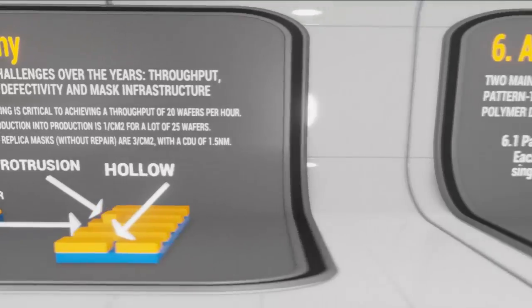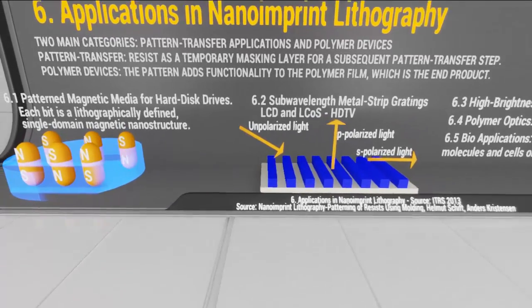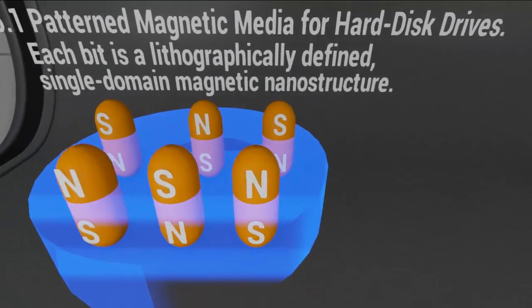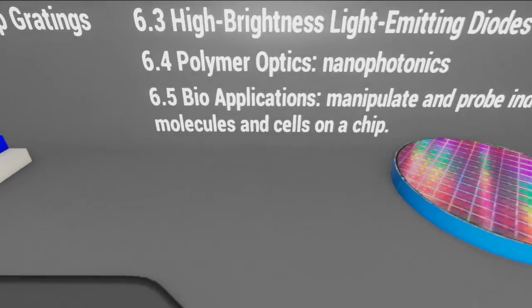Let's look now at applications in nano-imprint lithography. NIL applications can be as manifold as those of other lithographic patterning methods. The applications can be divided into two main categories: pattern transfer applications and polymer devices. In pattern transfer applications, the nano-imprint lithography structure is used as a temporary masking layer for a subsequent pattern transfer step. In polymer devices, the imprinted patterns add functionality to the polymer film, which is the end product. Examples include patterned magnetic media for hard disk drives, sub-wavelength metal strip gratings, high-brightness light-emitting diodes, polymer optics, and bio-applications.